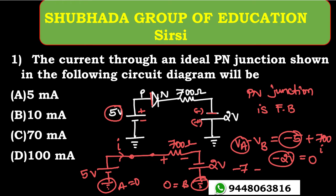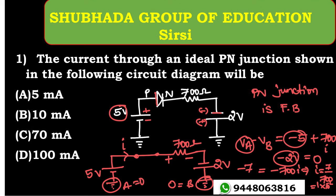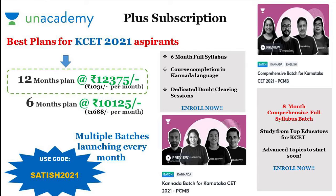So minus 5 minus 2 equals minus 700I, which gives minus 7 equals minus 700I. Therefore I equals 7 divided by 700, which equals 1 times 10 to the power of minus 2 ampere, or 10 milliampere. Option D is the right answer for this question.